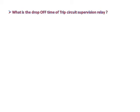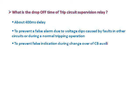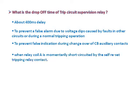What is the drop-off time of a trip circuit supervision relay? About 400 milliseconds delay — to prevent a false alarm due to voltage dips caused by faults in other circuits or during a normal tripping operation, to prevent false indication during changeover of CB auxiliary contacts, and when relay coil A is momentarily short-circuited by the self-reset tripping relay contact.